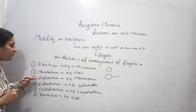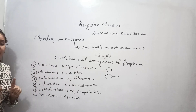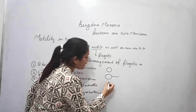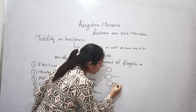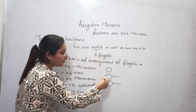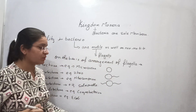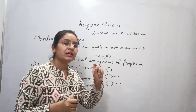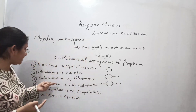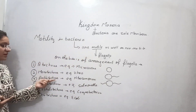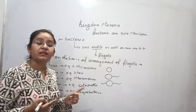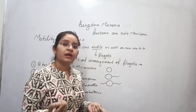Amphitrichous bacteria means a bacterium having one flagellum at each of its two ends — one flagellum on both ends. The example of amphitrichous bacteria is Nitrosomonas, a free-living bacterium that helps in nitrogen fixation.